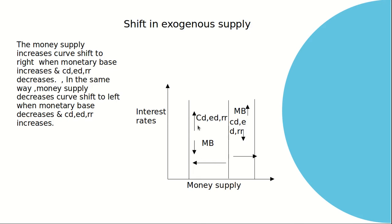When these ratios increase and the monetary base decreases, money supply will decrease and the curve shifts to the left. Money supply decreases and the curve shifts to the left when the monetary base decreases and the CD ratio, ER ratio, and RR ratio all increase. So in case of a leftward shift, these ratios increase and the monetary base decreases.